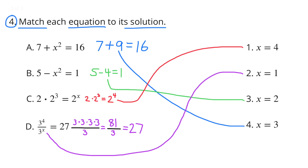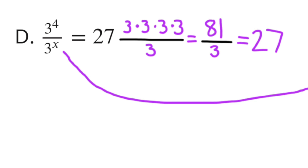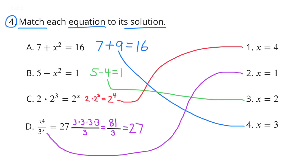Part d: 3 to the fourth power divided by 3 to the power of x equals 27. Rewriting as 3 times 3 times 3 times 3 over 3: since 3 to the fourth power equals 81, and 81 divided by 3 equals 27, the value of x should be 1. So 3 to the power of 1 is just 3, and 81 divided by 3 equals 27. Solution 2 matches equation d.